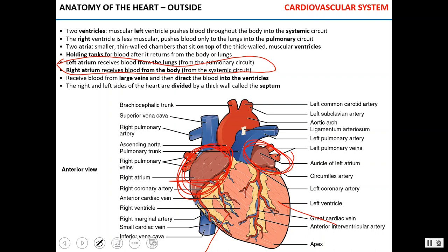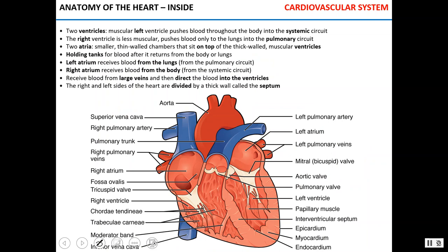Between the left and right sides of the heart is a septum, a thick wall of muscle. The blood vessels that deliver blood into the right atrium are the superior and inferior vena cava. The left atrium receives blood through the right and left pulmonary veins. Ventricles are muscular chambers that pump blood through the body or into the pulmonary circuit. The muscular left ventricle pumps blood into the systemic circuit, while the less muscular right ventricle pumps blood through the lungs into the pulmonary circuit.